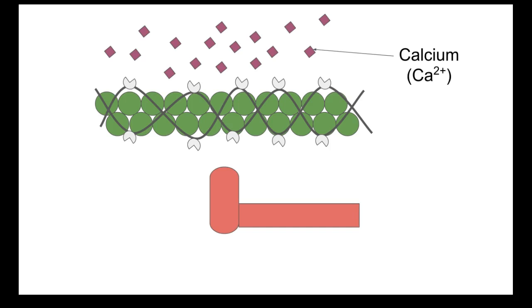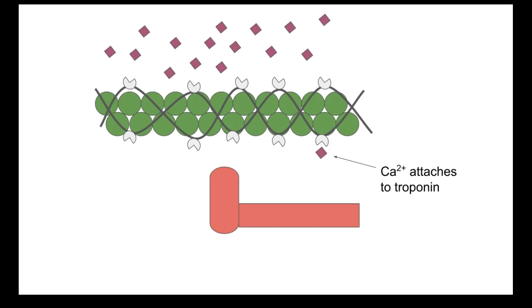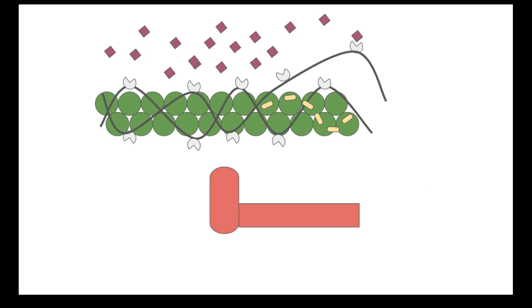Once calcium fits with the troponin, it basically removes the tropomyosin so the myosin head can attach to the actin. So when calcium goes onto the troponin, it's going to basically pull off that whole strip of tape, and what it leaves behind is kind of a sticky residue.